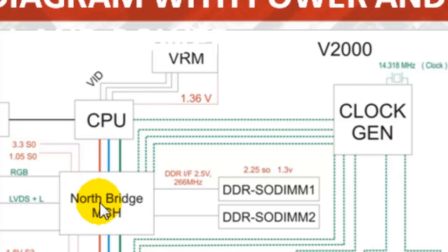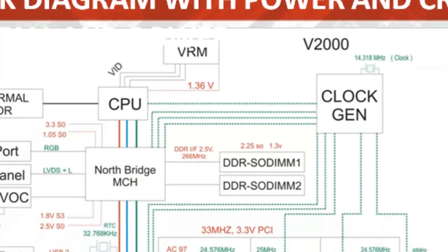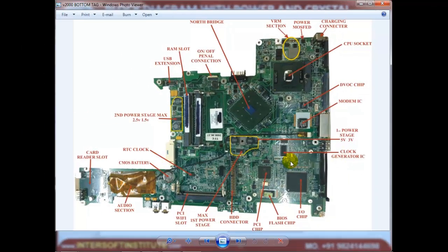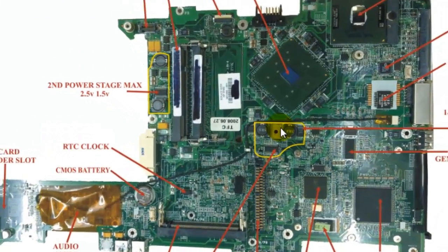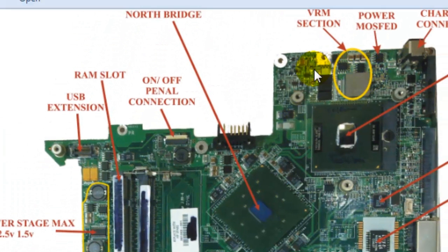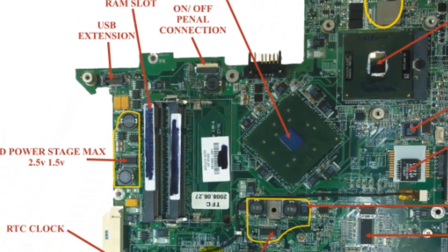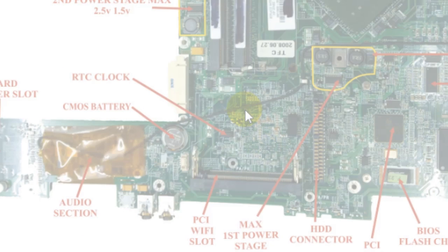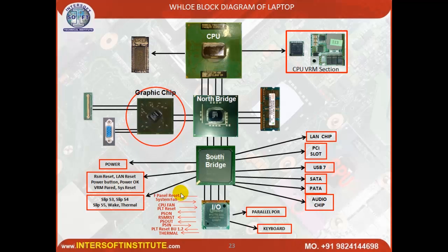The North bridge is also present — it is a large IC near the CPU. North bridge is connected with the CRT port. The RAM and display section are also connected with the North bridge. On the backside, the South bridge is connected to the hard disk, Wi-Fi, audio, LAN, and PCI — all connections go through the South bridge.